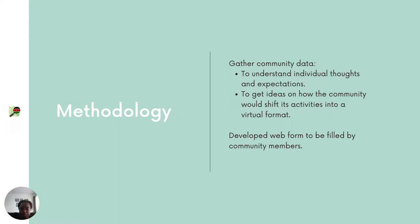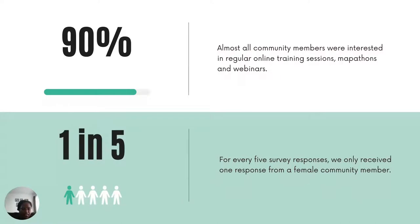We got a lot of information back. Ninety percent of respondents were still interested in online training sessions, mapathons, and webinars. But one thing that stood out was that for every five survey responses, only one came from a female community member. This stood out and made us think about what activities we could do to improve that number — it wasn't that we lacked female members, but their engagement was a big low in terms of activities.